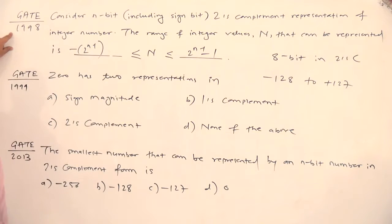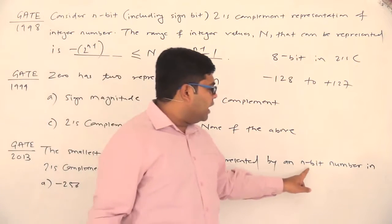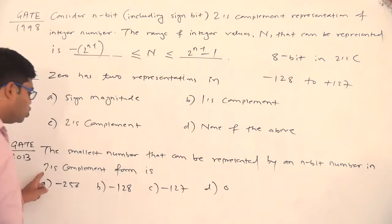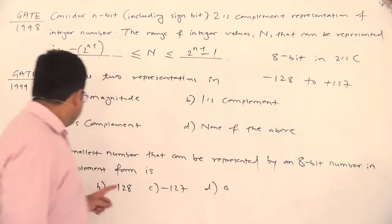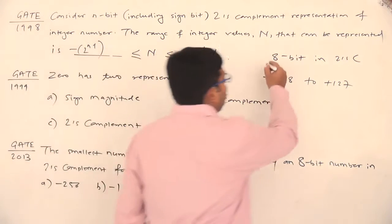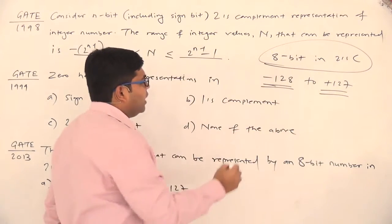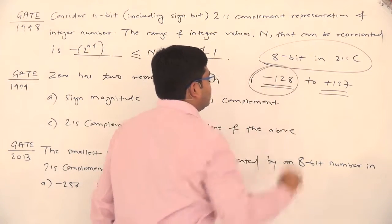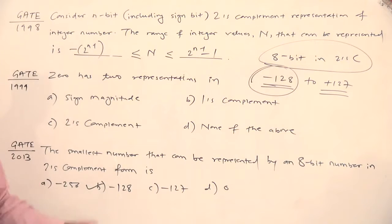And then apart from this question, there is one question in GATE 2013 which says the smallest number that can be represented by an 8-bit number in 2's complement form is. Now we know in 8-bit 2's complement form, the range will be minus 128 to plus 127 and that is why the smallest number that can be represented will be minus 128. So here option B will be the correct answer minus 128.